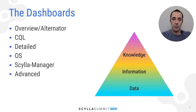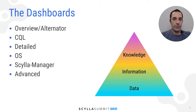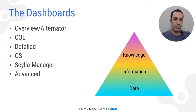The monitoring dashboards go from knowledge to information. The overview — or alert alternative dashboard if you're using an alternator — is the first place and most of the time the last place to look to know what is going on with your cluster. The CQL dashboard is the place to look for CQL information and optimization suggestions. Going down the knowledge pyramid, detail is a detailed look at a node or shard level. OS is for machine metrics like disk and network. Scylla Manager is for extra information about Scylla Manager operations, and the advanced dashboard — the pit of this pyramid — is useful for field and support, but less helpful for most users. I'll focus on the first two.